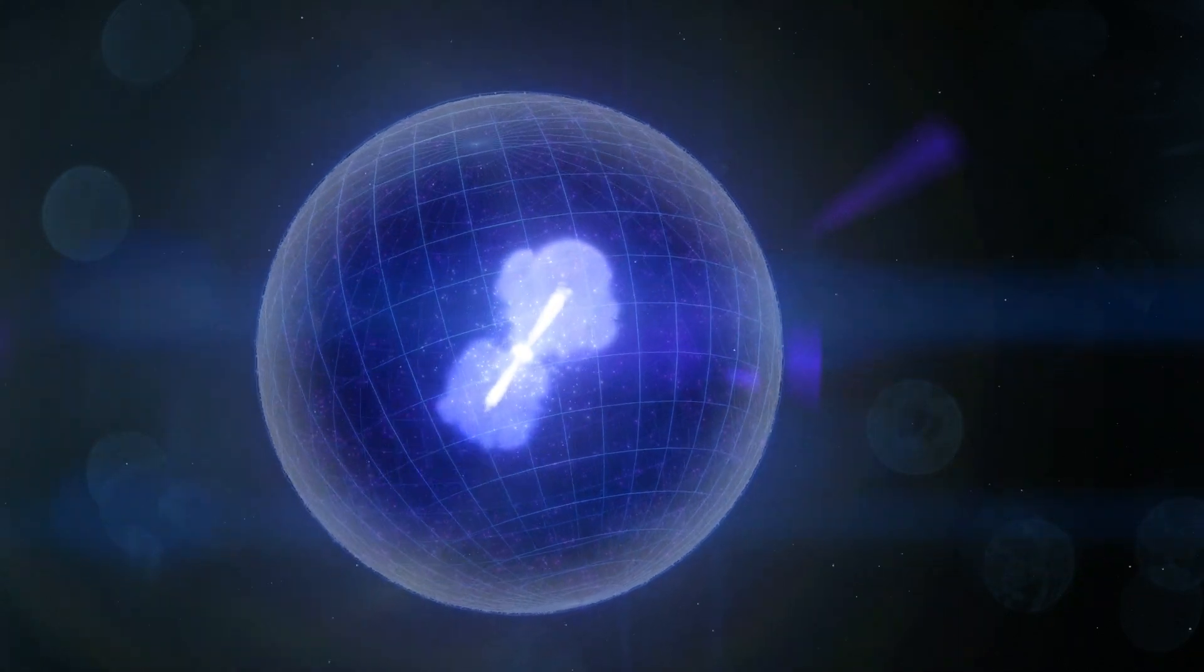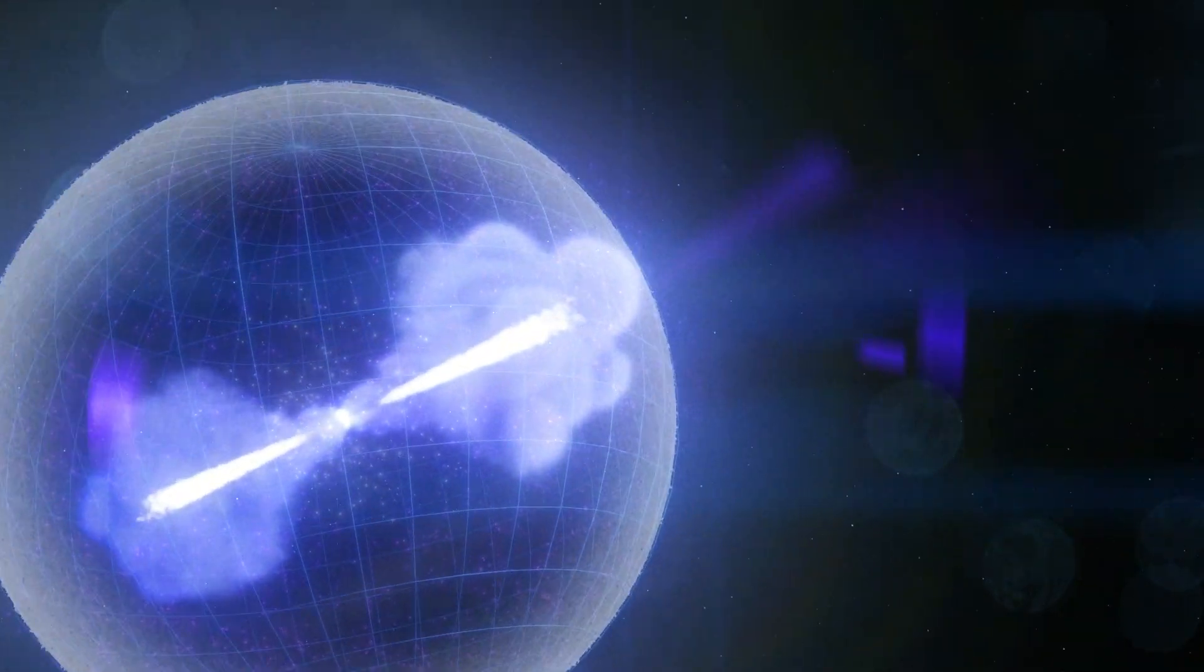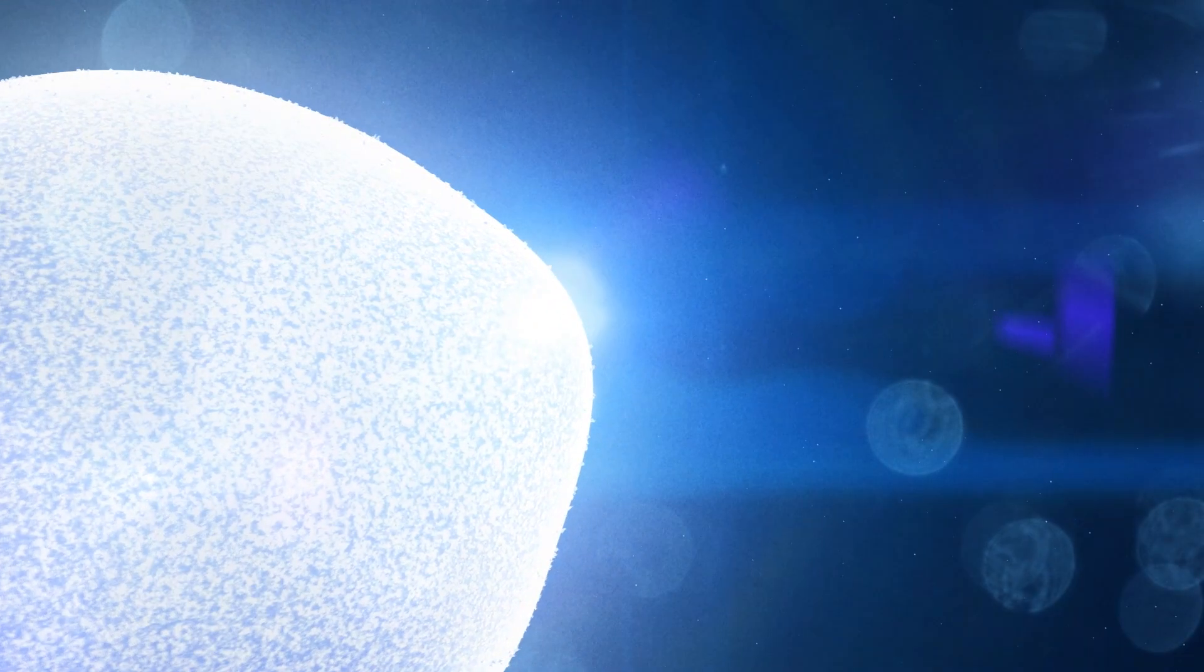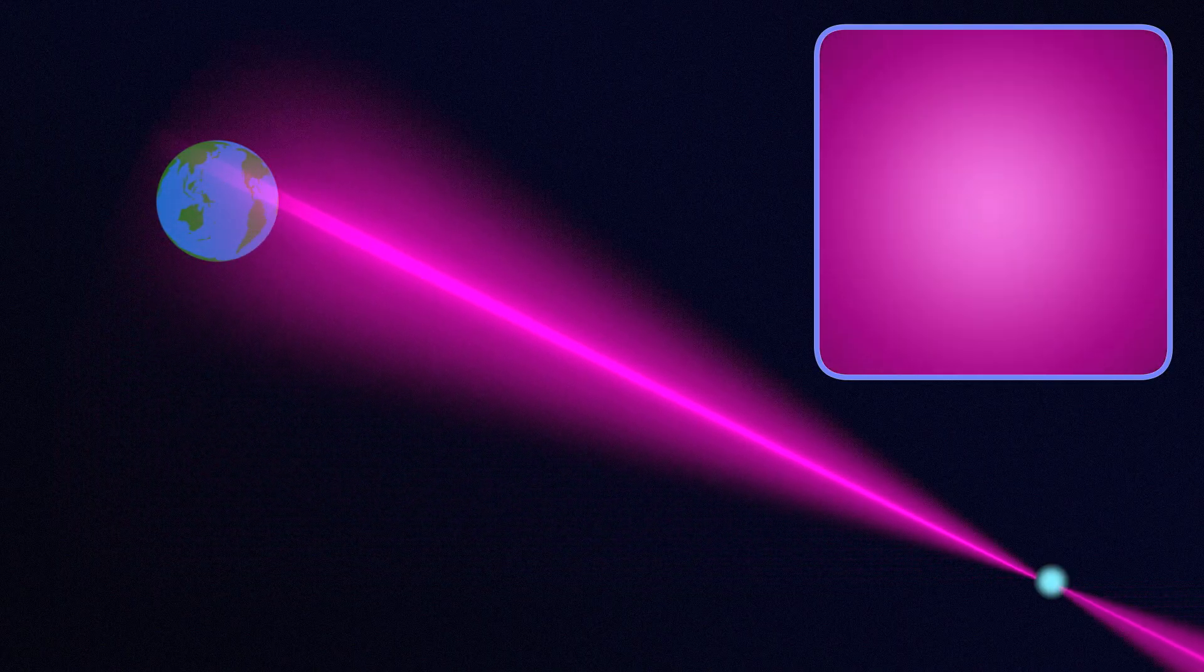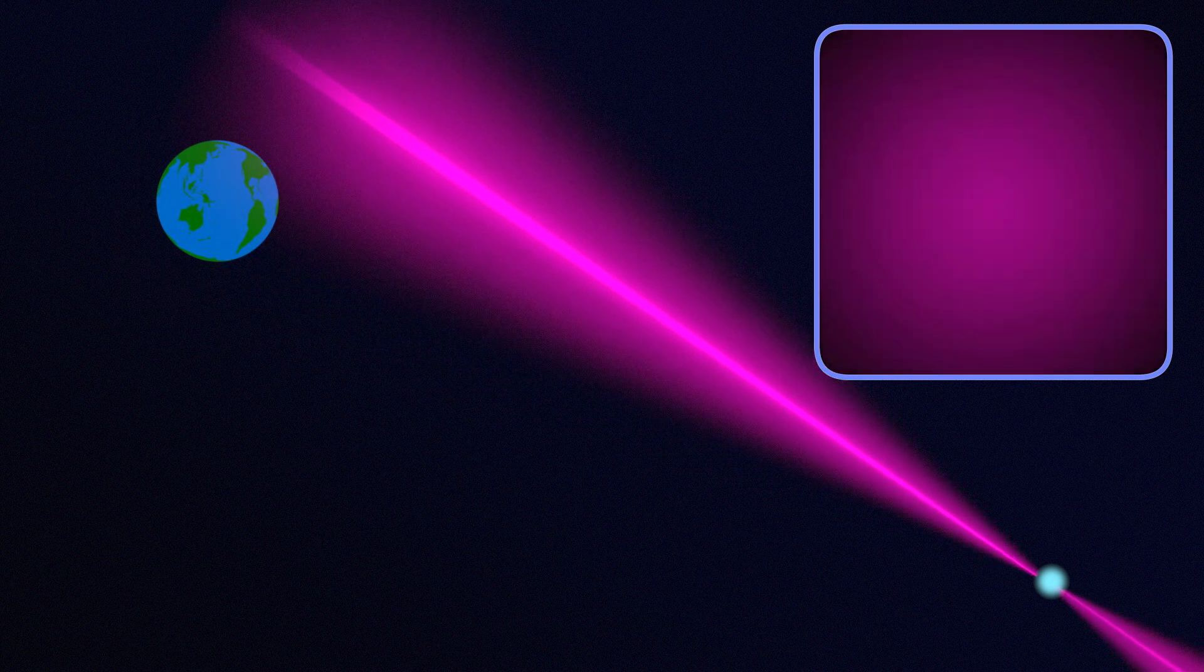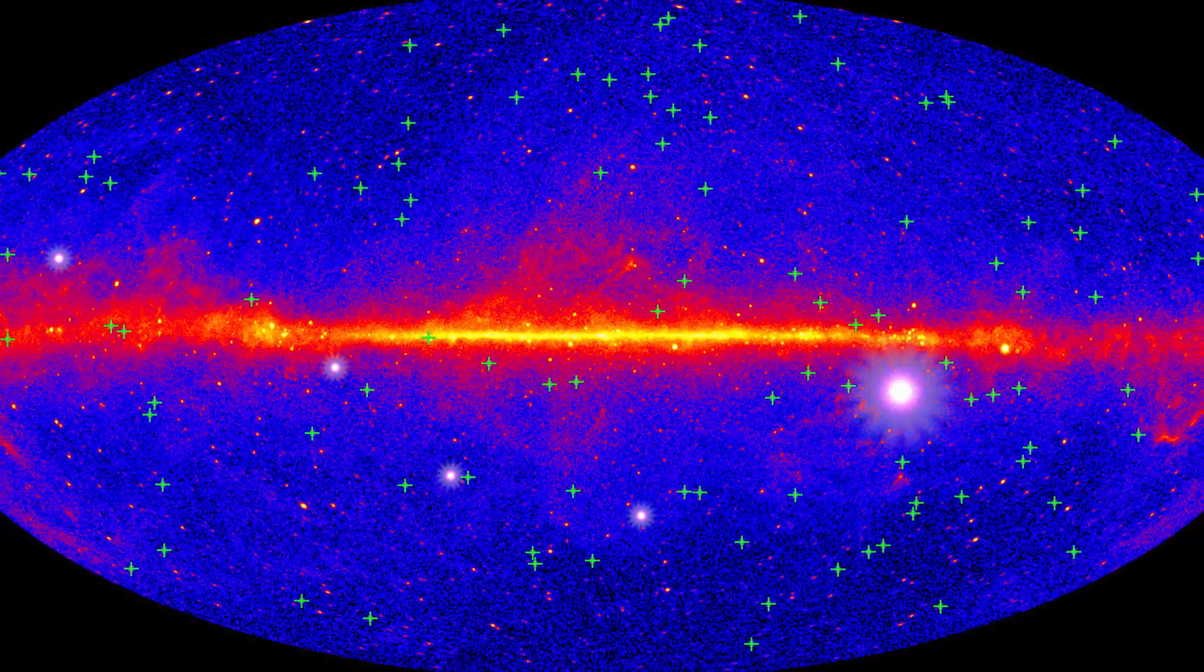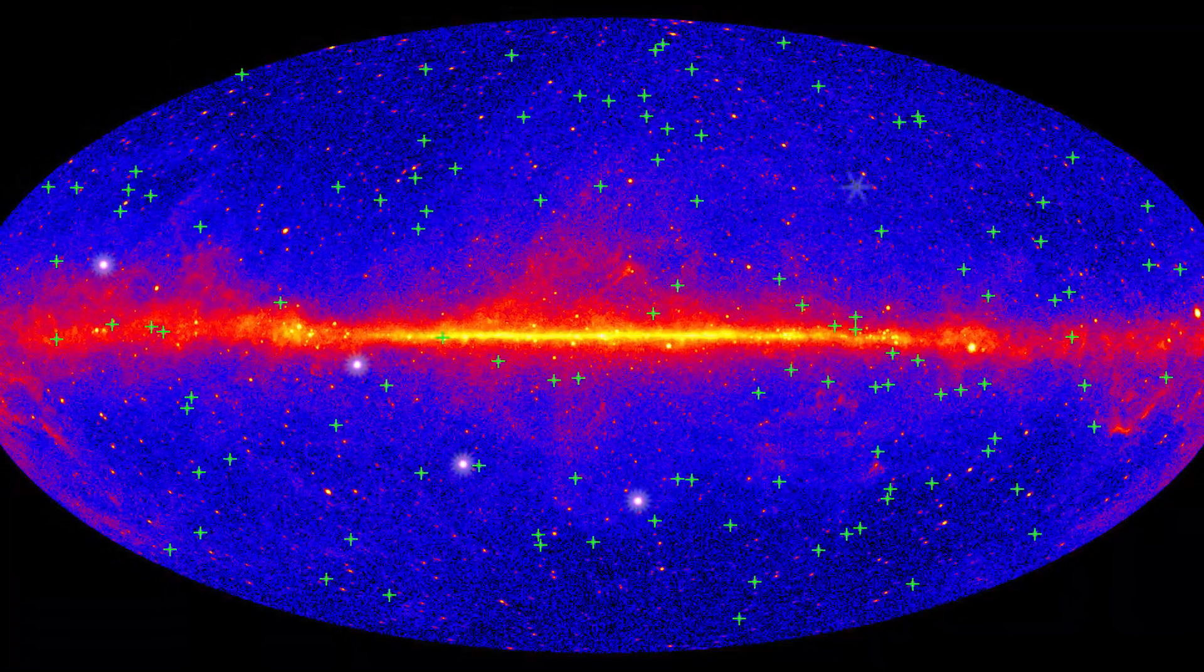Matter swirled toward the black hole, and some of it was thrown out along two jets moving near the speed of light. The jets drilled their way out of the star and blasted into space. We see a gamma-ray burst when one of these jets happens to point almost directly at Earth. That happens somewhere in the sky almost every day.